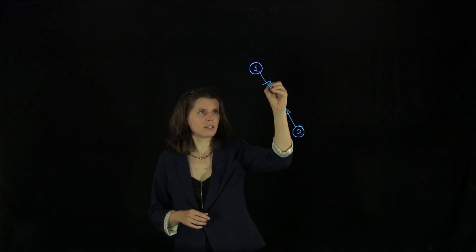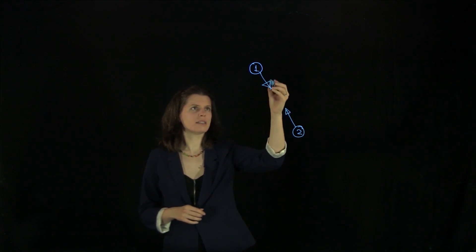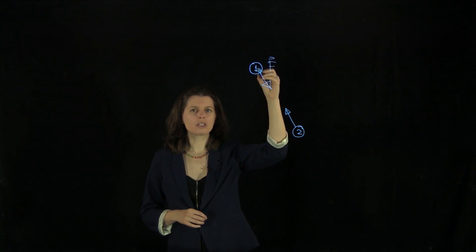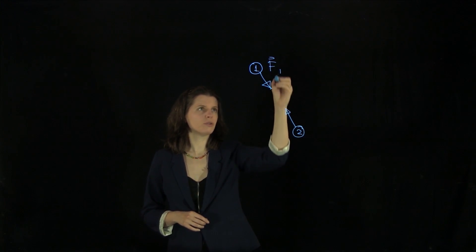So we have a gravitational force, and we label this as F. And this is the force on object one due to the interaction between the bodies one and two.